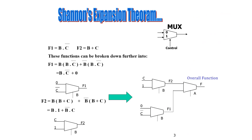Here, F1 is nothing but BC̄ from the previous case. F2 is B plus C. These functions can be broken down further by using Shannon's Expansion Theorem. So F1 is equal to B into BC̄, written here, plus B̄ into BC̄.